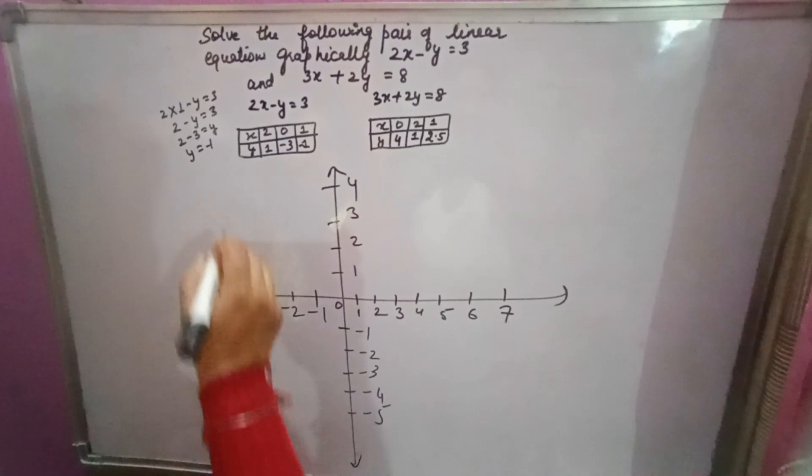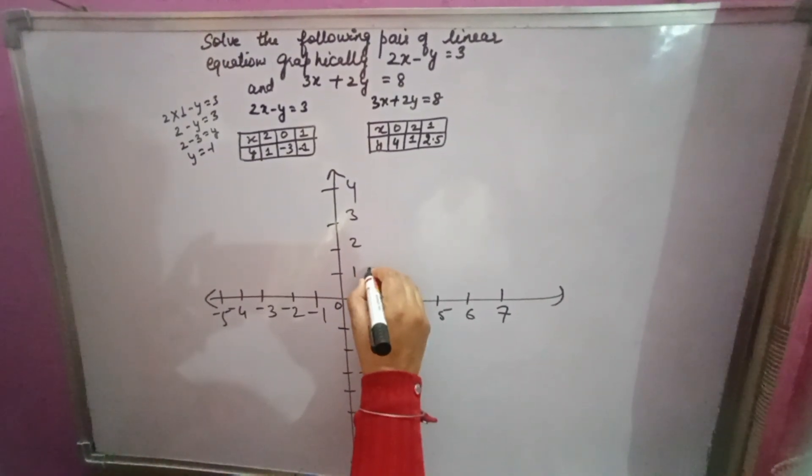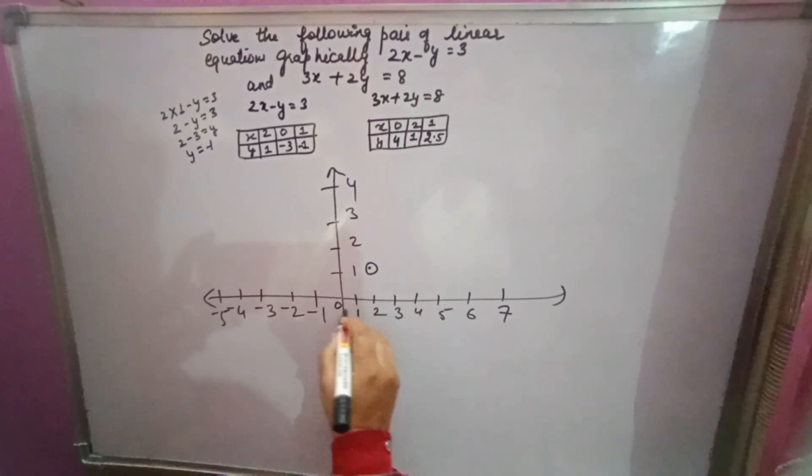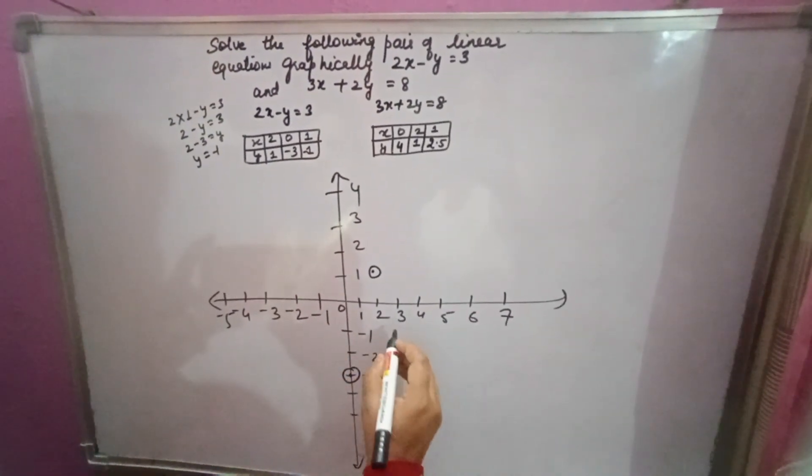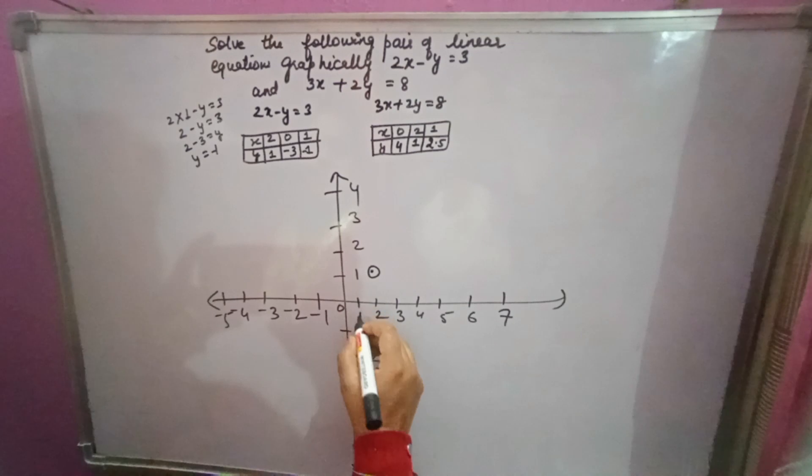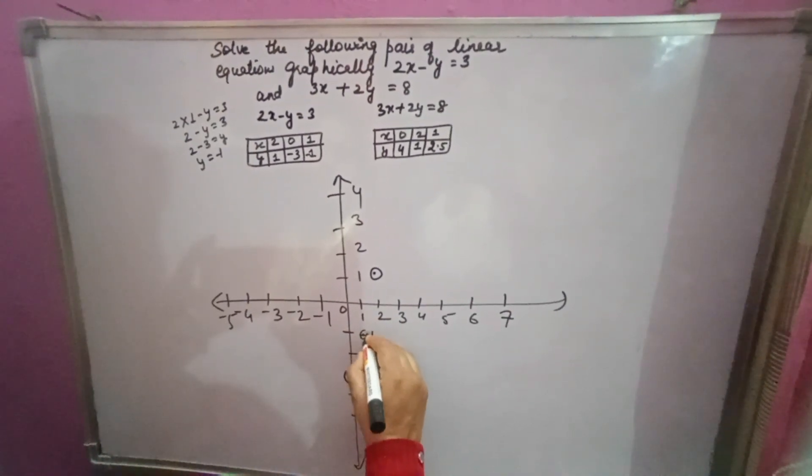Now plot the graph. x equals 2, y equals 1. One point will come here. x is 0, y is minus 3. One point will come here. x is 1, y is minus 1. So approximately one point will come here.